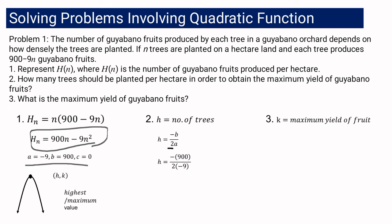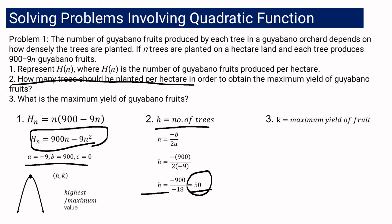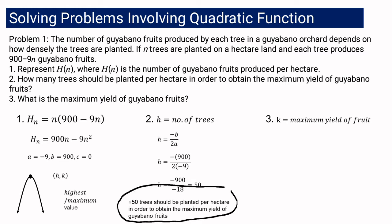Since H equals 50 and H refers to the number of trees, therefore 50 trees should be planted per hectare in order to obtain the maximum yield of guayabano fruits. To answer question number 3 — what is the maximum yield — we are looking for the value of K, using the equation K equals (4AC minus B squared) all over 4A.